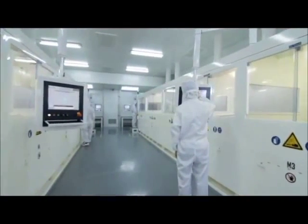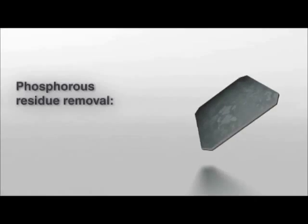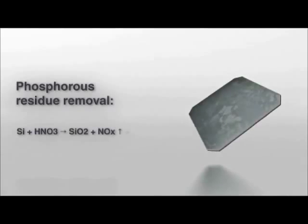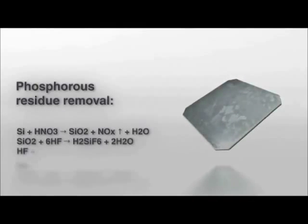In order to remove unwanted phosphosilicate glass and phosphorous diffusion, the wafers go through a step called PSG etching and isolation.